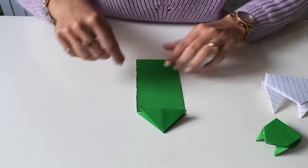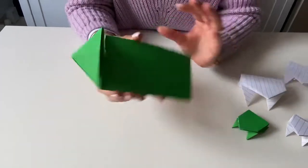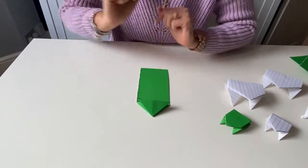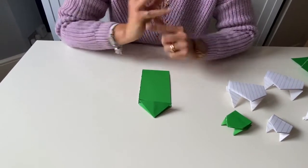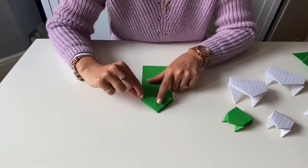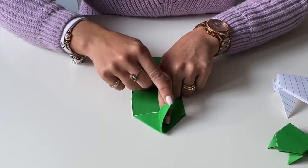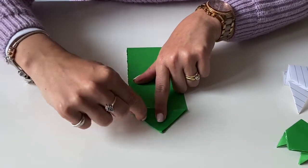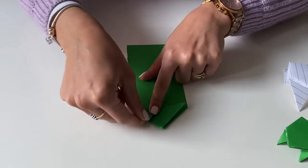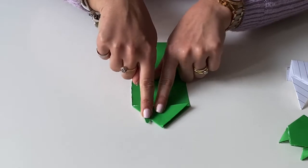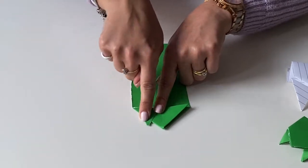So once you've completed that, that is what that will look like. Now we need to make the frog's legs. So we're going to take this corner, hold down the middle, take this corner, we're going to lift it up so that the leg is going to poke out the side, and we're going to squish down nice and hard.